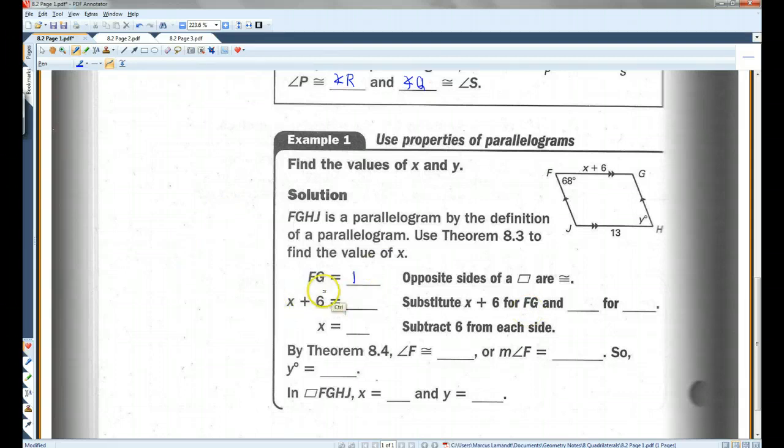All right, actually, you know what? I think they want us to do this. So, FG equals JH because these are the two opposite sides. FG is X plus 6. JH is 13. So, I substituted X plus 6 for FG, and I substituted 13 for JH. If I subtract 6 from both sides, X equals 7. All right? Now, also, we know the opposite angles are congruent. So, the opposite sides are congruent. The opposite angles are congruent. So, angle F is congruent to angle H. Or, the measure of angle F equals the measure of angle H. So, Y equals 68. So, in this parallelogram, X equals 7. Y equals 68.